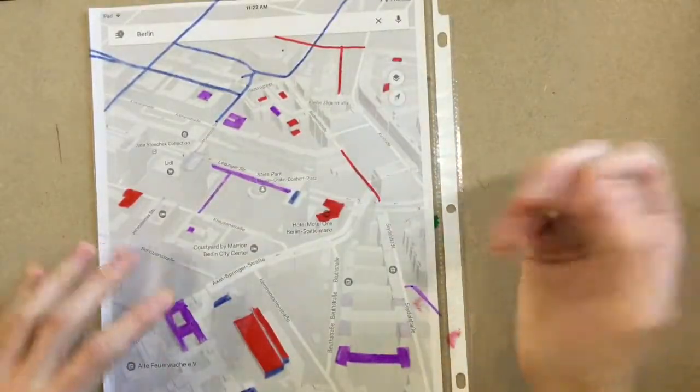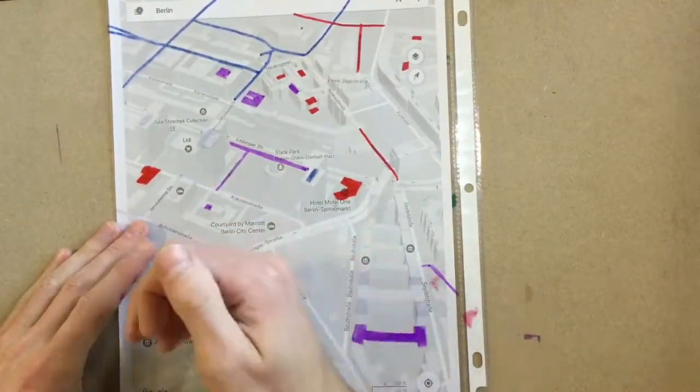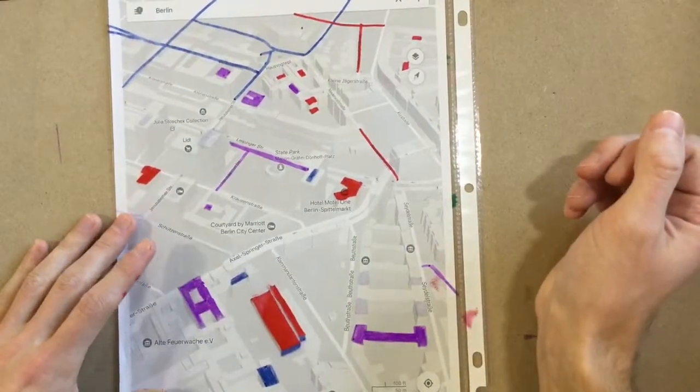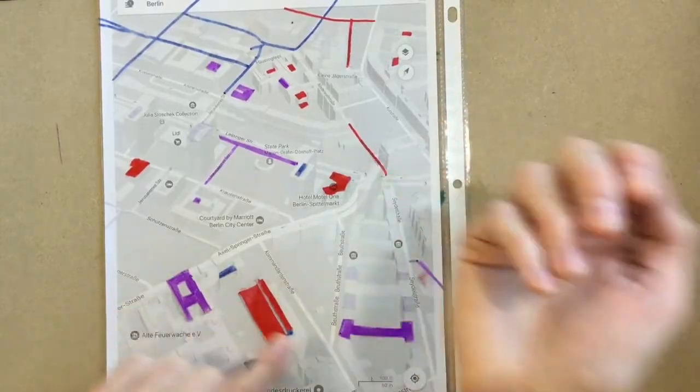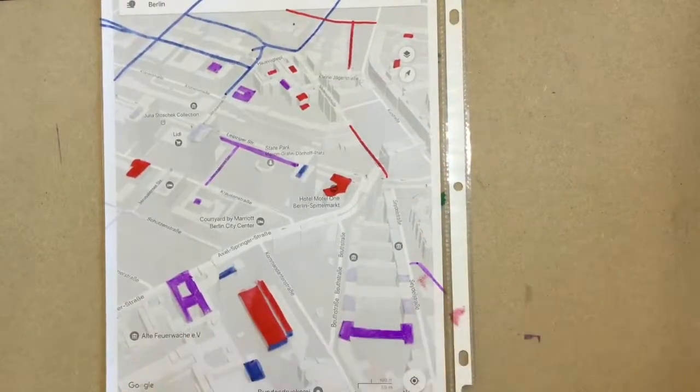One thing I forgot to mention is please be careful when you're coloring. I would not go setting your hand on a spot that you just got done coloring. You can see that I accidentally put my hand in this red spot, and then it ended up leaving a few marks on my paper.